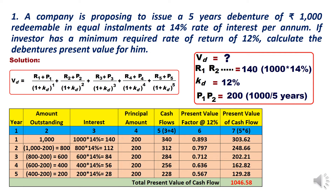In year two, the outstanding amount is 800 — calculated as 1000 minus 200, since the principal payment was already made in year one. Interest = 800 into 14 percent = 112. So cash flow = 200 + 112 = 312. In year three, outstanding = 800 minus 200 = 600. Interest = 14 percent of 600 = 84. Cash flow = 200 + 84 = 284. This continues until year five.